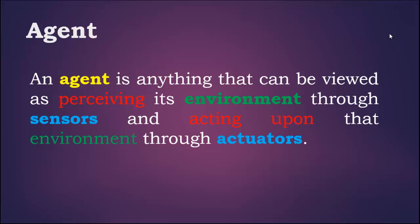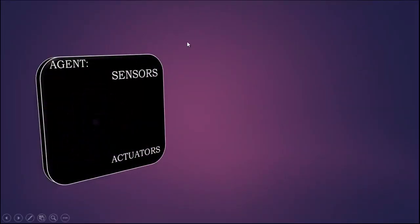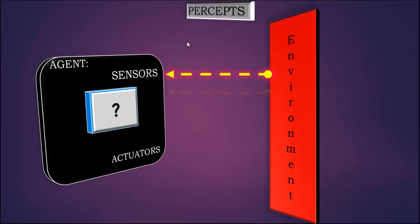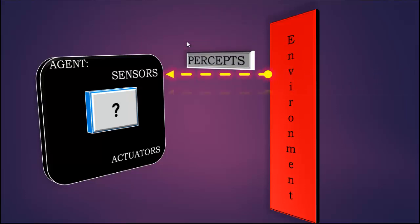An agent is anything that can be viewed as perceiving its environment through the sensors and acting upon that environment through its actuators. This is the structure of an agent with sensors, actuators and the environment where it is deployed. It takes inputs in terms of percepts from the environment, then gives some decision based upon the percepts to the actuator, and then the actuator acts upon the environment.